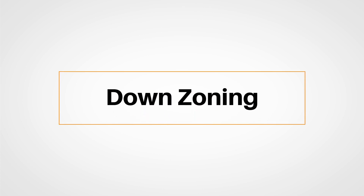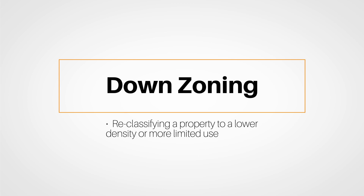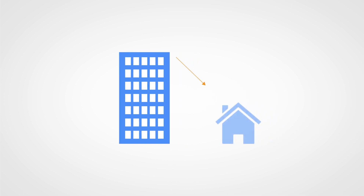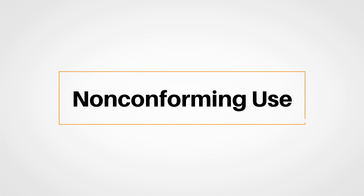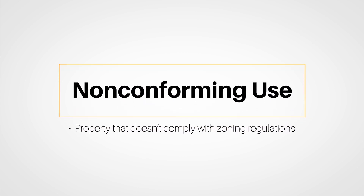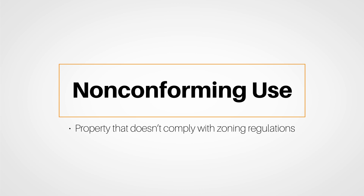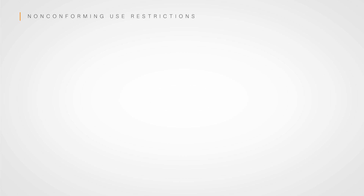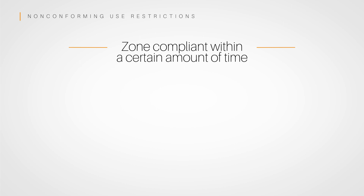Downzoning is the process of reclassifying a property to lower density or more limited use. This might occur when a community rezones a parcel from multifamily to single-family designation. The designation of non-conforming use can be given to a property that doesn't comply with zoning regulations. This might occur when a use was originally in compliance, but changes made to the regulations force a property into non-conformity. The use may be designated as lawful and allowed to continue, but there may be certain restrictions.